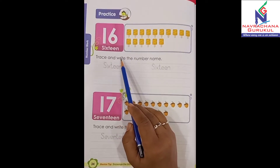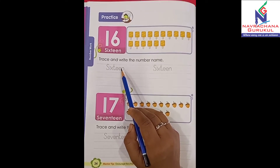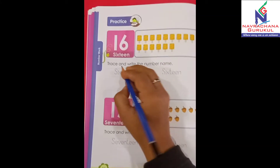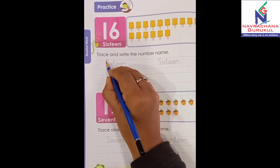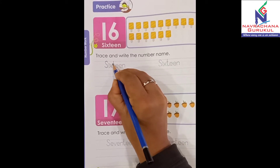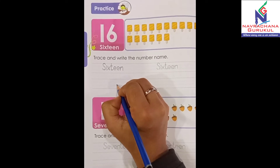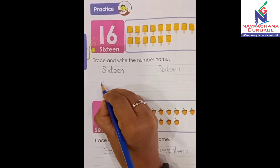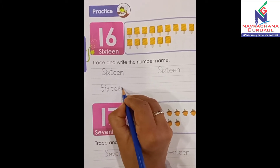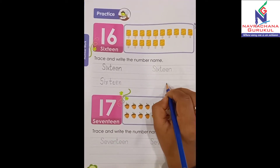Now, trace and write the number name. Here you have given the number name of 16. You have to trace it and write it over here. Let's trace: S-I-X-T-E-E-N, 16. Now let's write it down over here: S-I-X-T-E-E-N, 16. Okay? Like this way, you have to write it over here.